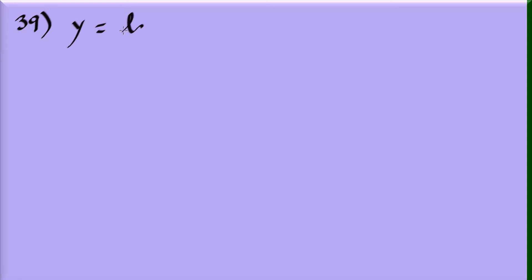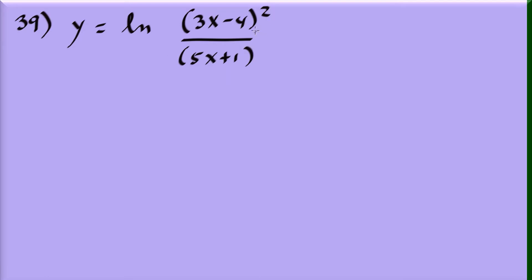Problem 39: differentiate y equals the natural log of (3x minus 4) squared over (5x plus 1). This is a quotient inside the log, but we use the log quotient property first: log of x over y equals log x minus log y.